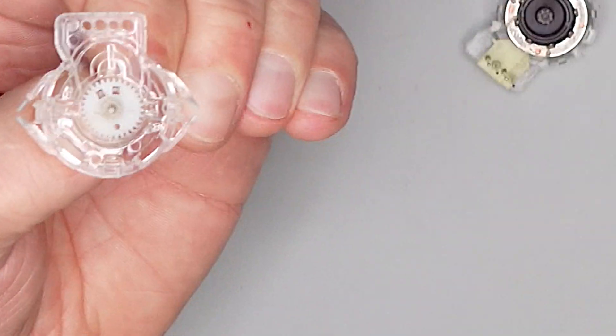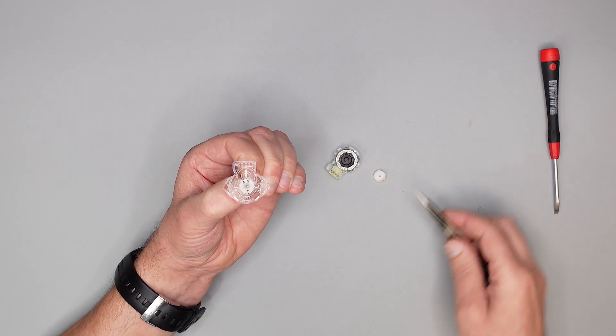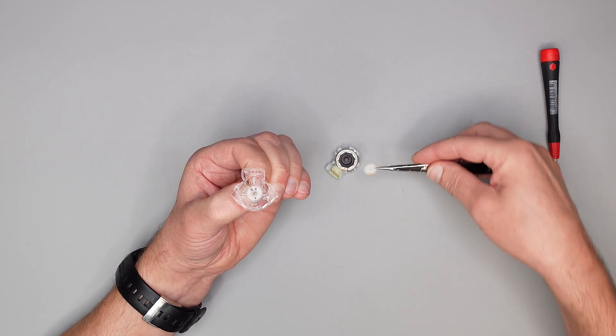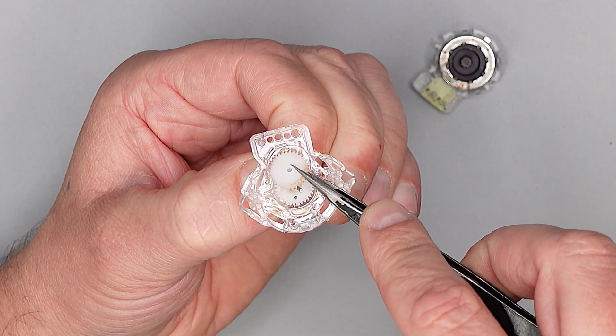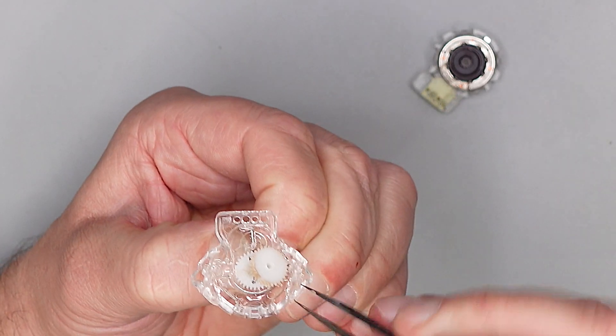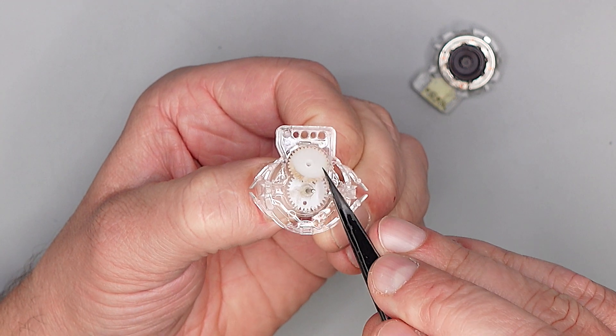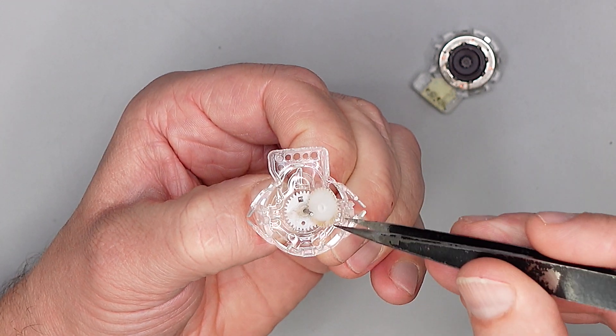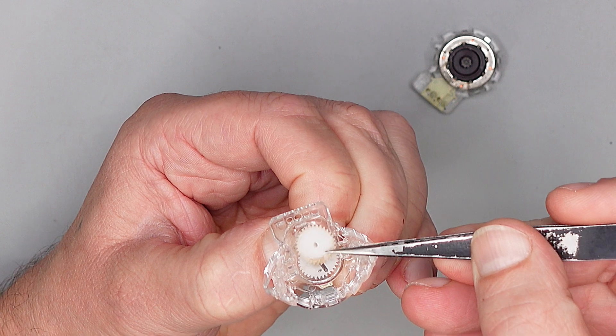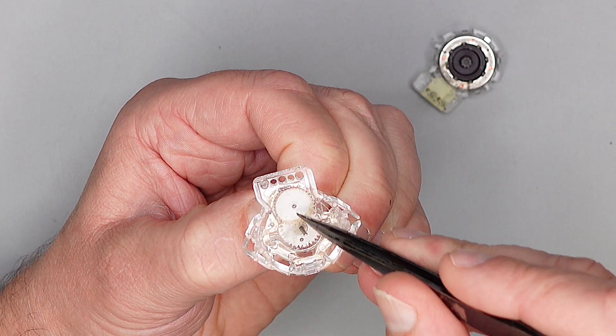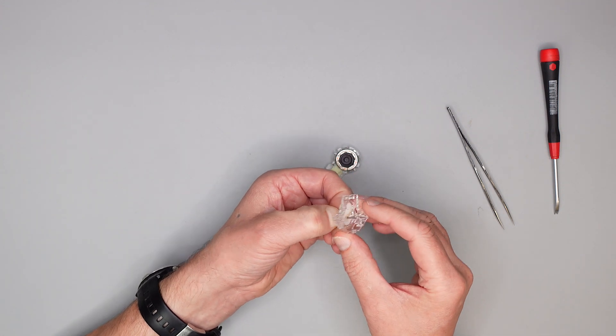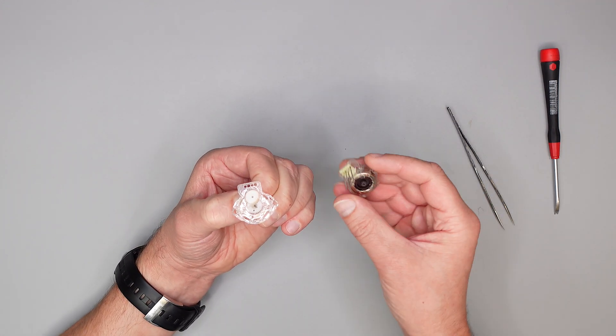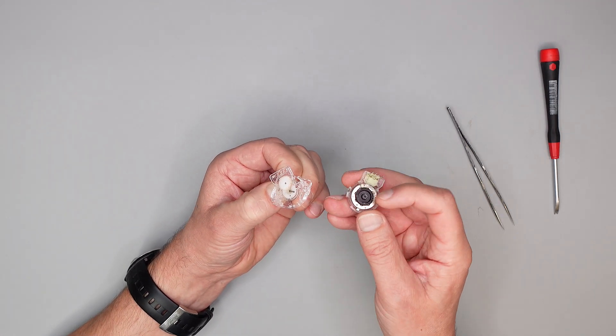Dann nehmen wir das zweite Zahnrad, setzen es jetzt hier auf die Achse auf. Das ist auch ein bisschen gefettet, ein bisschen gucken dass man es genau drauf kriegt, ein bisschen fummelig. Da setzen wir das drauf, immer schön hinten auf Spannung halten, damit die Feder nicht wegflutscht.